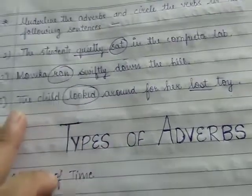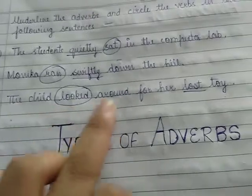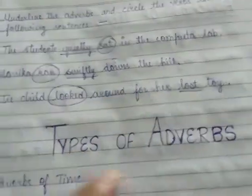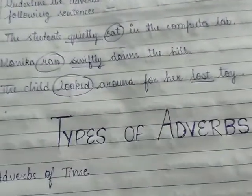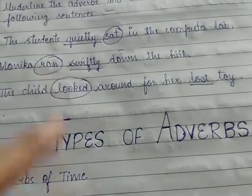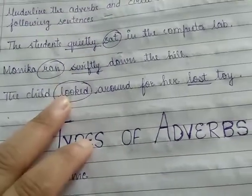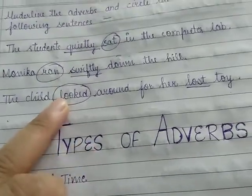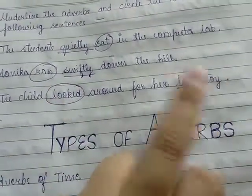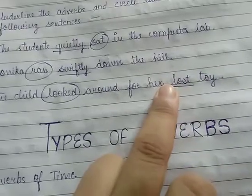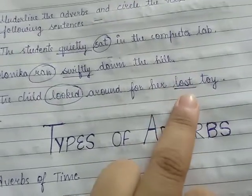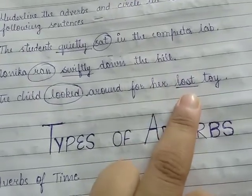Next: the child looked around for her lost toy. बच्चा अपना खोया हुआ toy ढूंढ रहा है. 'Looked' यानि देखना — verb. 'Lost' toy की खासियत बता रहा है कि वो गुमा हुआ है.